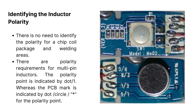There is no need to identify polarity for a chip coil package and welding areas. However, there are polarity requirements for multi-pin inductors. The polarity point is indicated by a dot or slash-one, whereas the PCB mark is indicated by a dot, slash, circle, or asterisk for the polarity point.